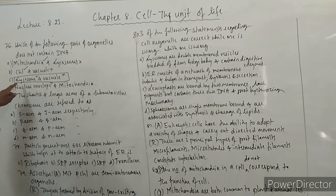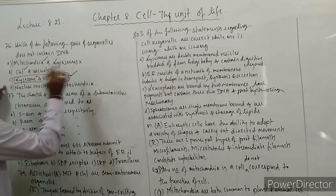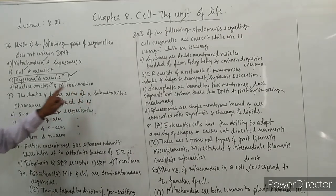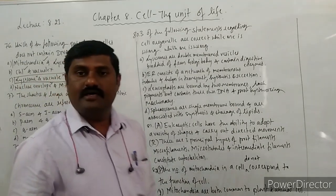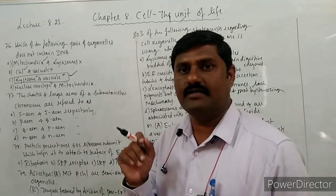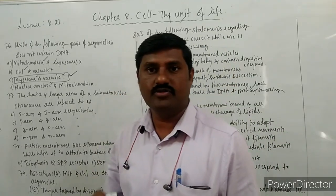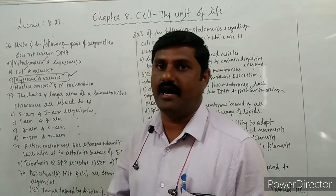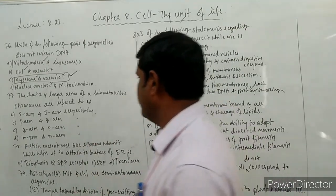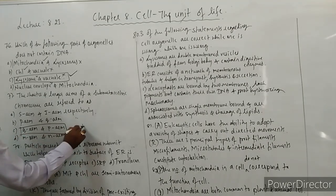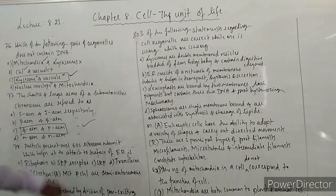The shorter and longer arms of a submetacentric chromosome are referred to as — one arm is the p arm and the other is the q arm. The correct answer is p and q arms respectively — option C.